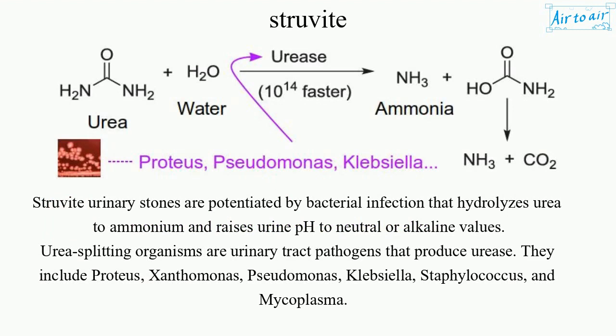Struvite urinary stones are potentiated by bacterial infection that hydrolyzes urea to ammonium and raises urine pH to neutral or alkaline values. Urea-splitting organisms are urinary tract pathogens that produce urease. They include Proteus, Xanthomonas, Pseudomonas, Klebsiella, Staphylococcus, and Mycoplasma.